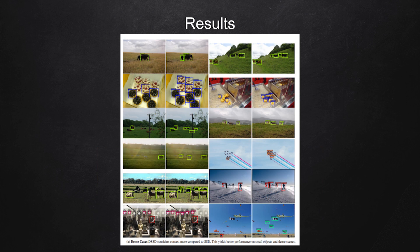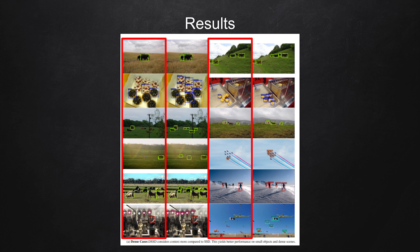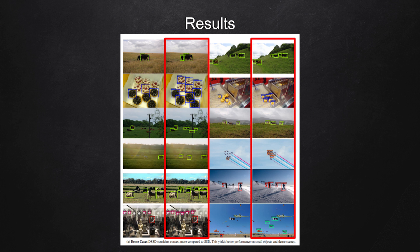Lastly, here are some examples showing the comparison between SSD and DSSD models. On the left, the result from SSD shows that it fails to detect some object instances that are really small. On the right, the result from DSSD shows that detection performance is much better than that of the SSD model.